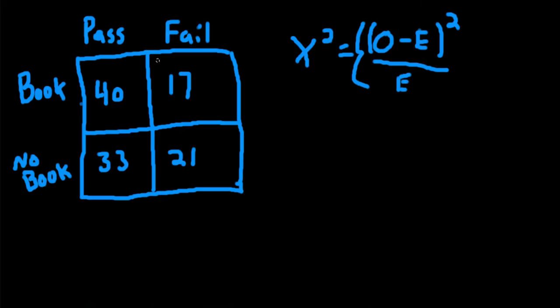So the first thing is we need to get our expected values given independence. So assuming that these two variables are independent, we're looking at passing and failing a class based on whether or not a student has or does not have the book. So we're looking to see are these two variables associated or independent. So the null hypothesis would be that they are independent of each other, they're not related. The alternative would be that they are related in some way.